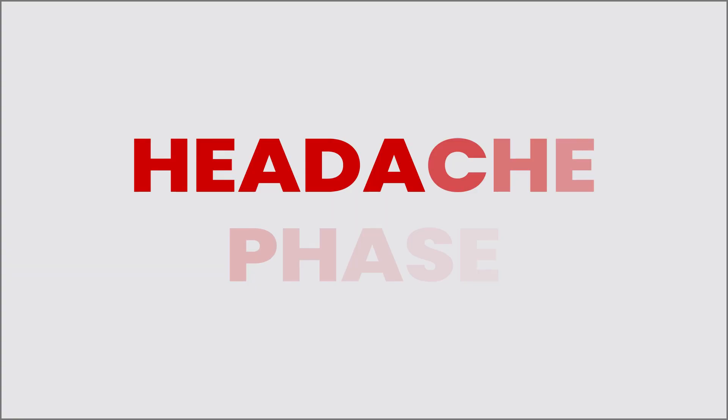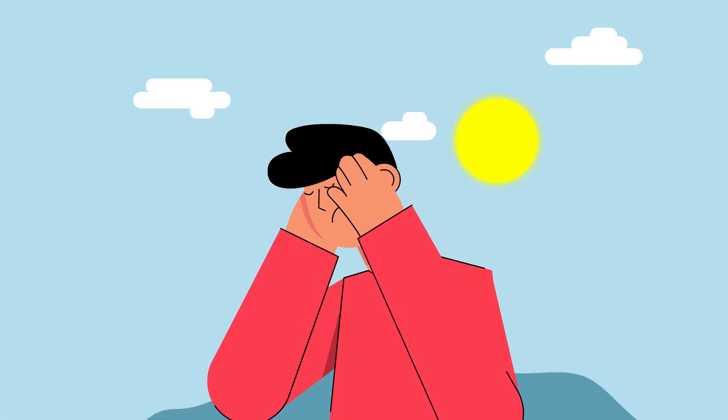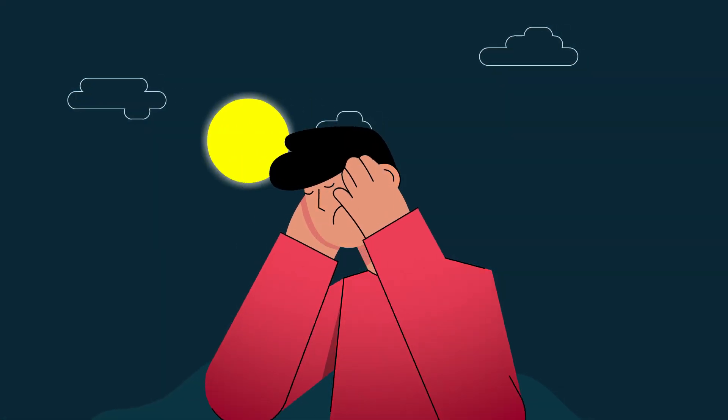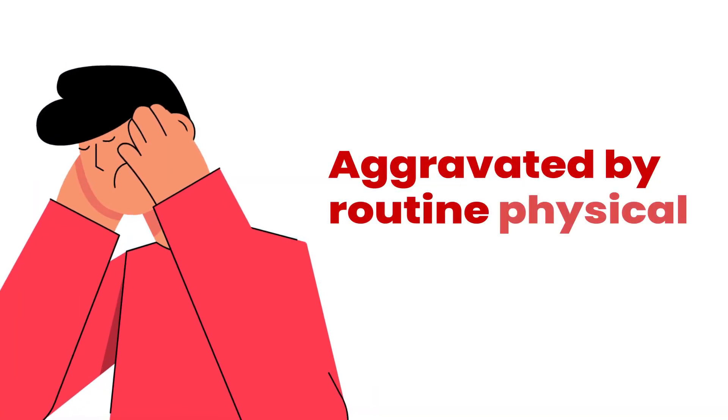Headache phase: headache can occur without aura as well and can typically last from 4 to 72 hours and occurs at a unilateral location. It's of pulsatile quality, moderate or severe in intensity, and aggravated by routine physical activity.